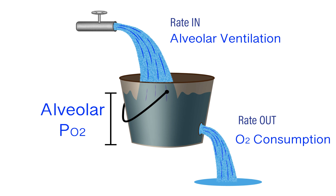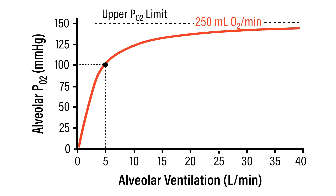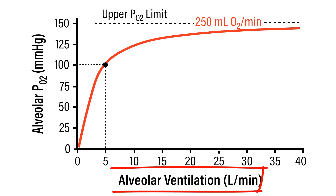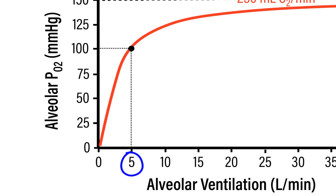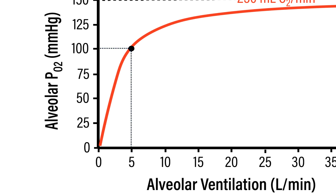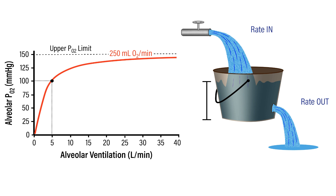We can represent the relationship between alveolar ventilation and the partial pressure of oxygen graphically at various levels of oxygen consumption. For this first graph, we're looking at the relationship between ventilation and PO2 at basal levels of O2 consumption — our resting rate, somewhere in the neighborhood of 250 milliliters of O2 per minute. An alveolar ventilation of 5 liters per minute produces an alveolar PO2 of 100 millimeters of mercury, which falls within the normal range. If you decrease alveolar ventilation, reducing that rate in, the alveolar PO2 falls.